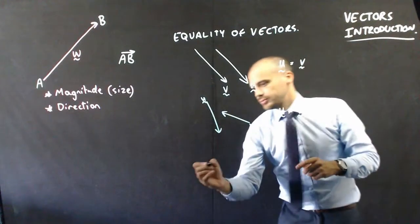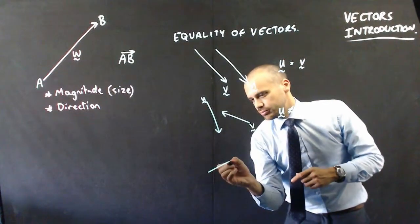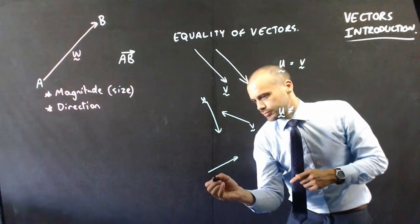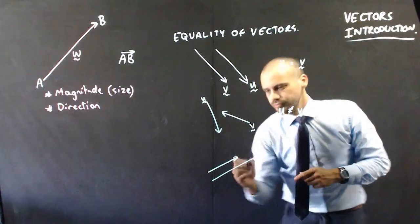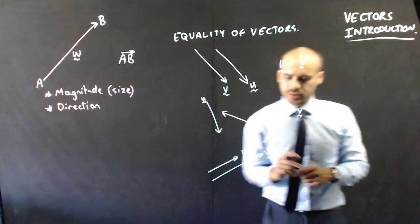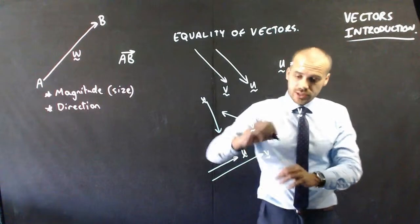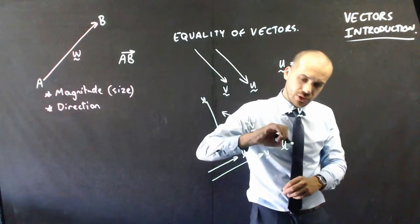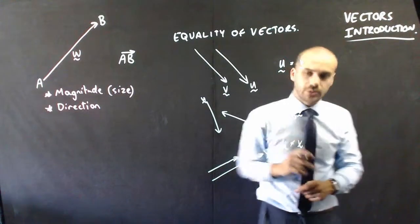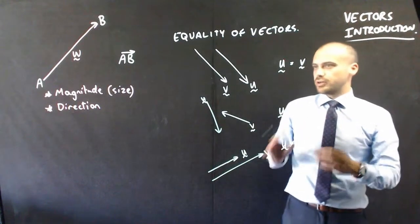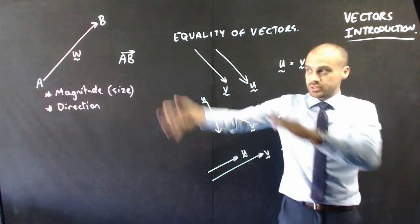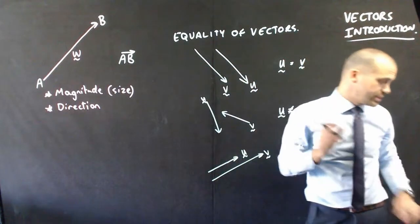And finally, that's U and that's V. They're moving in the same direction but they're not the same size. So U is not equal to V. Alright, so vectors: magnitude and direction. Let's get started on some stuff.